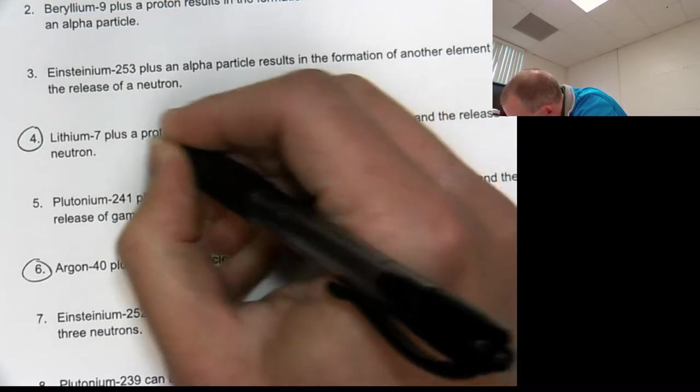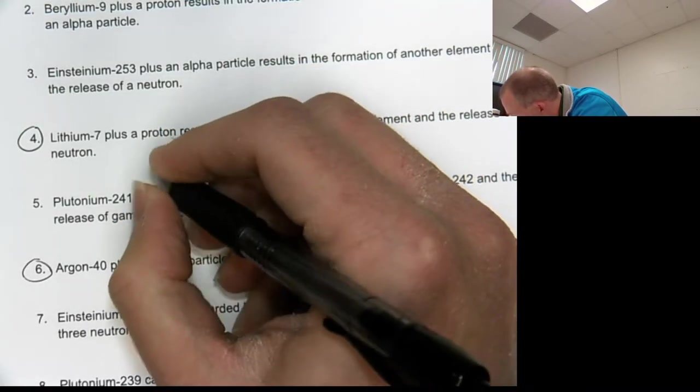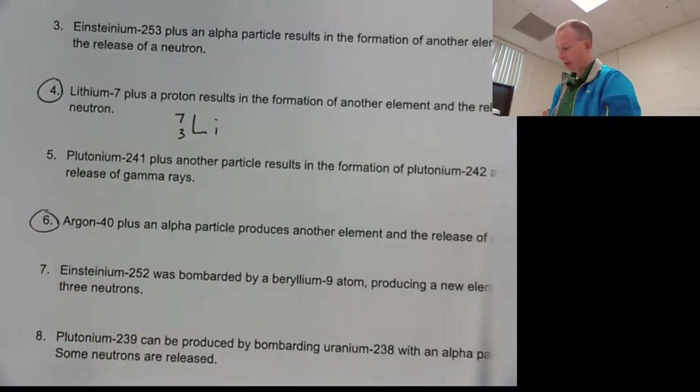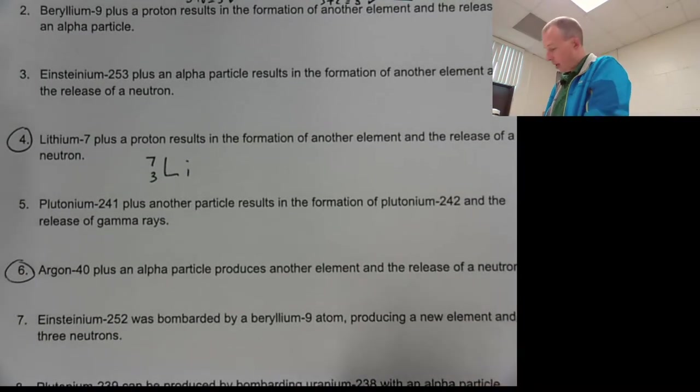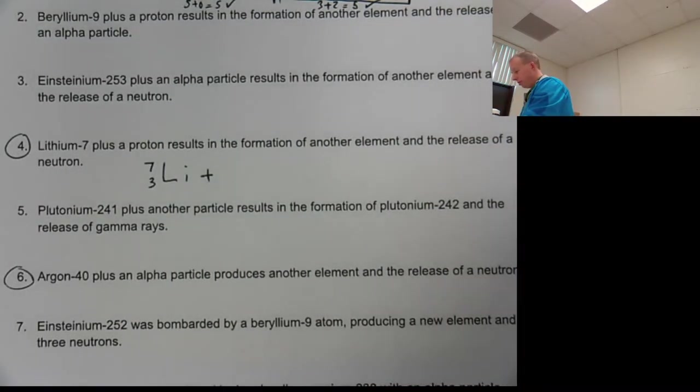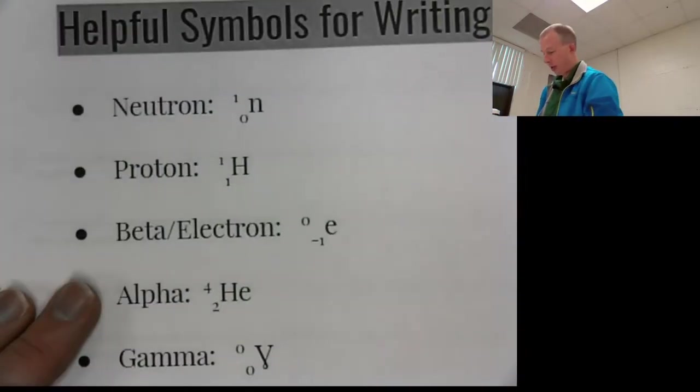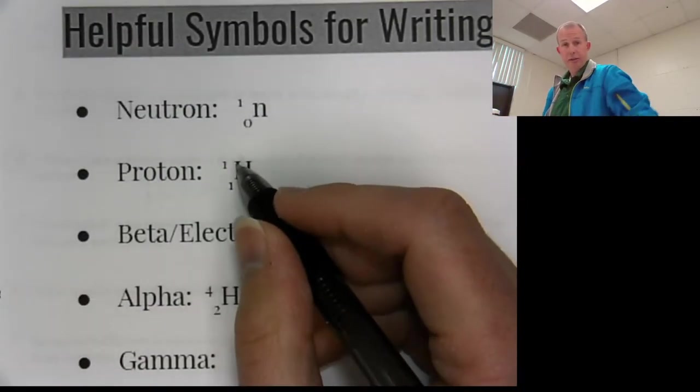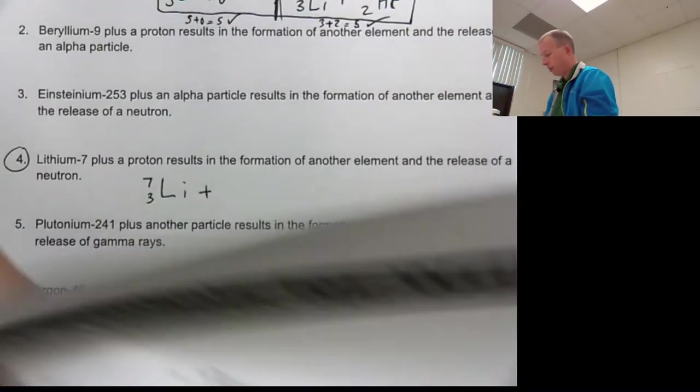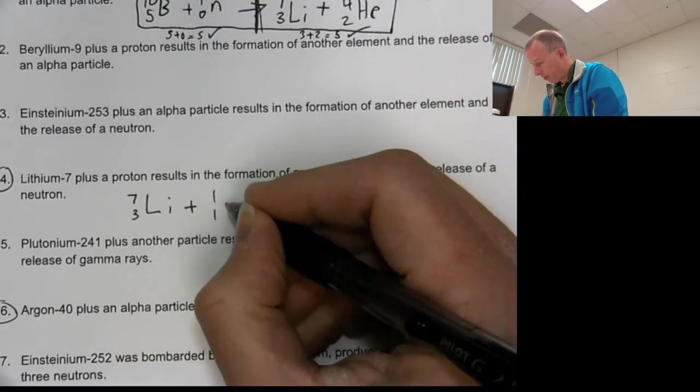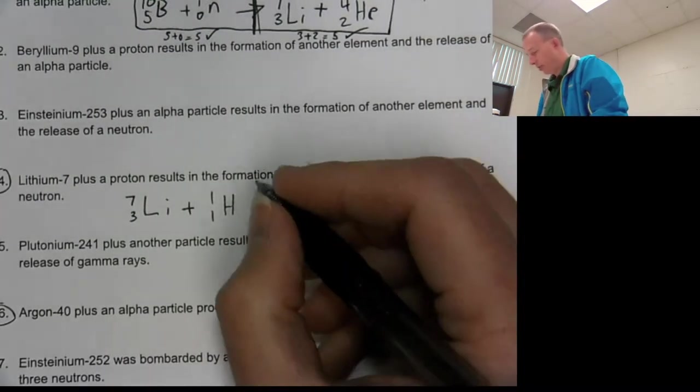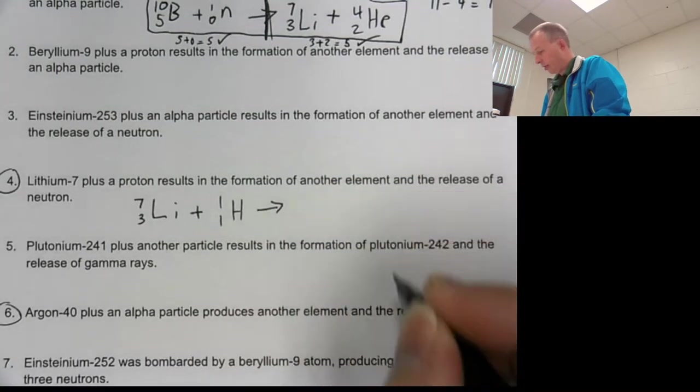So we have lithium-7, lithium-7, and we establish that lithium's atomic number is three. Again, if you're not sure, look it up on the table. So lithium plus a proton. Remember a proton looks like this because a proton is a hydrogen atom. Just remember that. So one, we've got our H. You could write a positive charge, but we don't need to worry about the ionic charges.